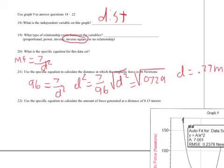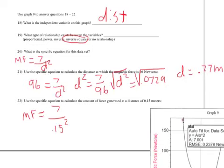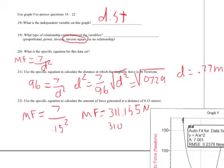Now for the easy one: I want to find the amount of force at a given distance. The magnetic force equals 7 over 0.15 squared — don't forget that it is D squared, so you have to remember to square that. That means magnetic force equals 311.155 Newtons. Since I only have two significant figures, I round my answer to two significant figures: 310 Newtons.